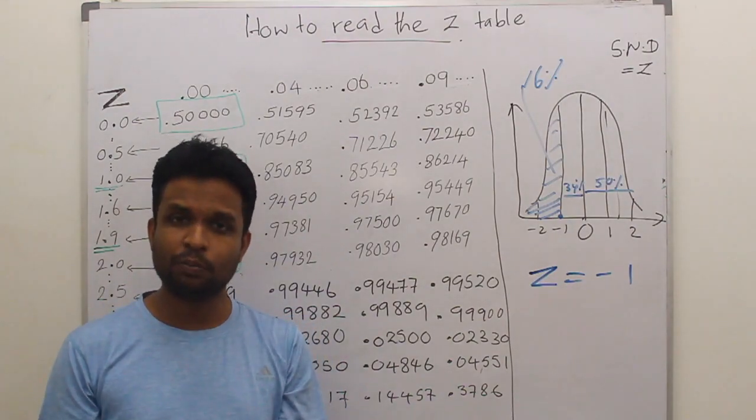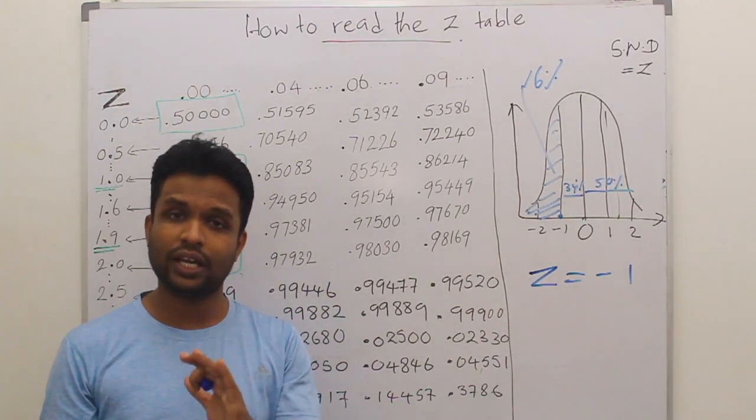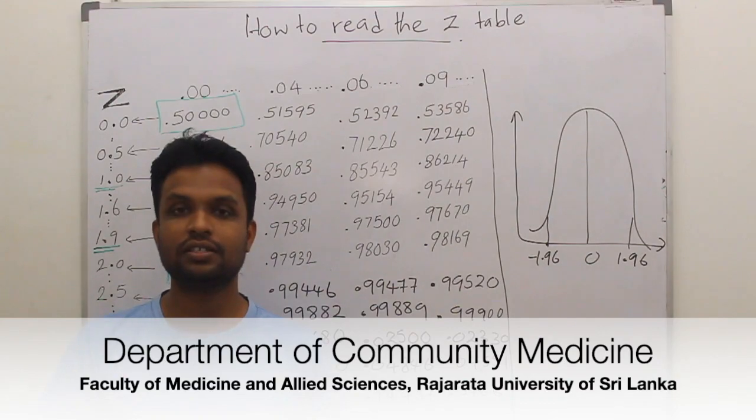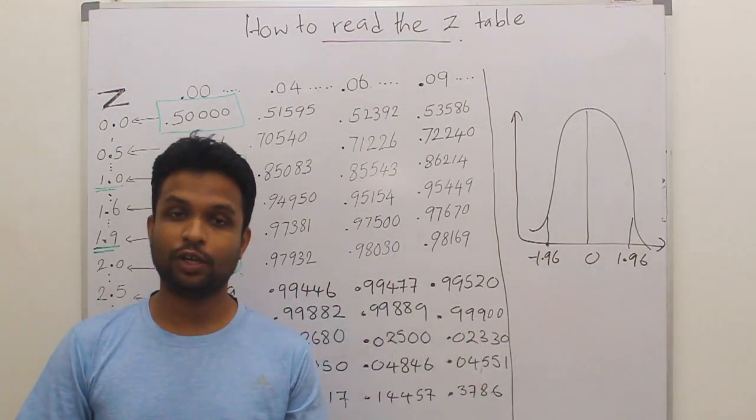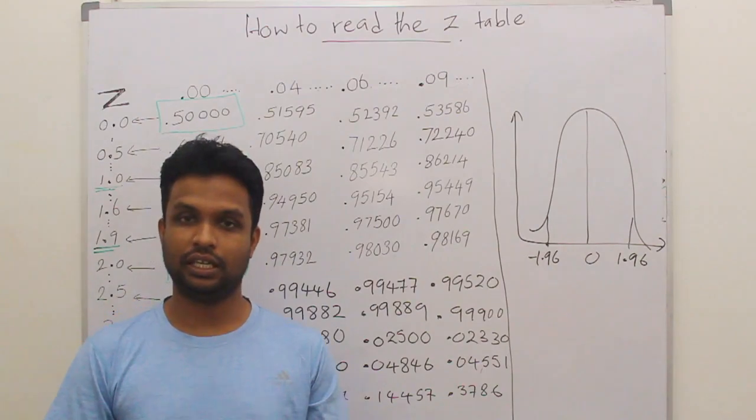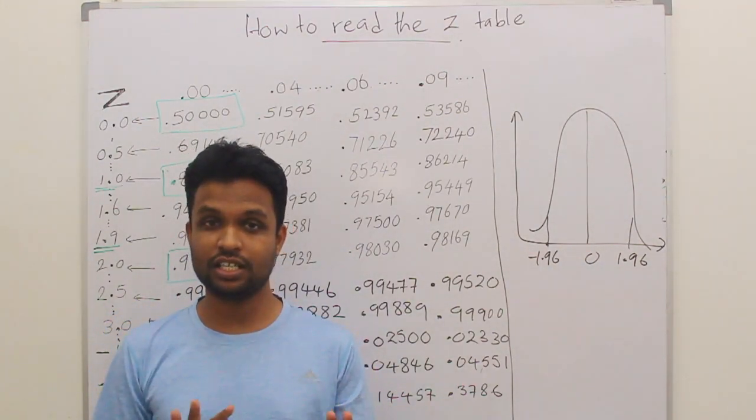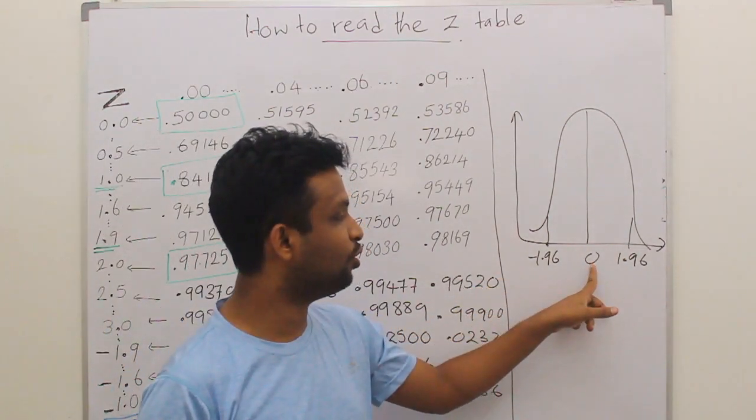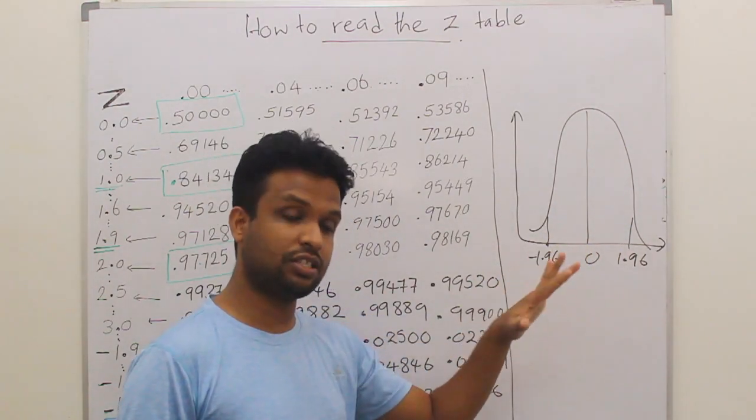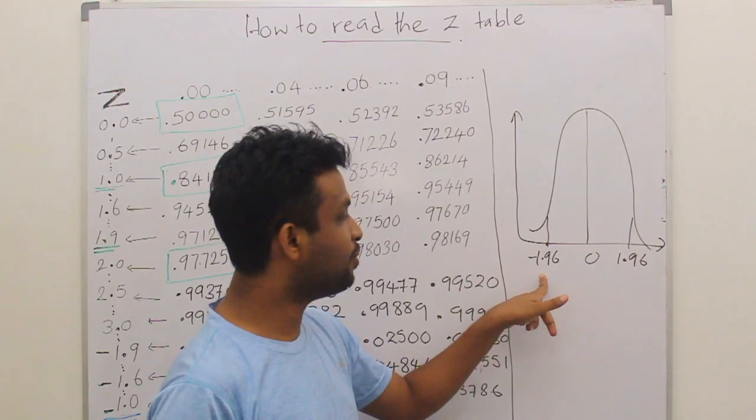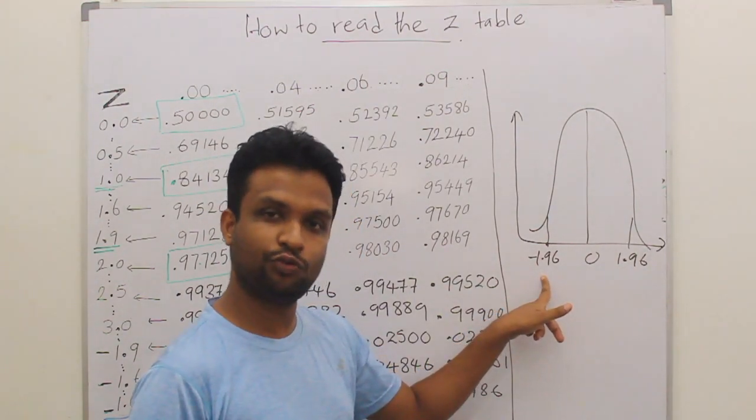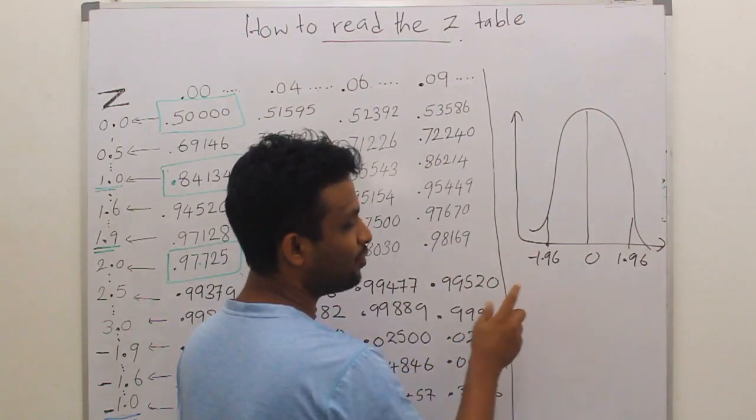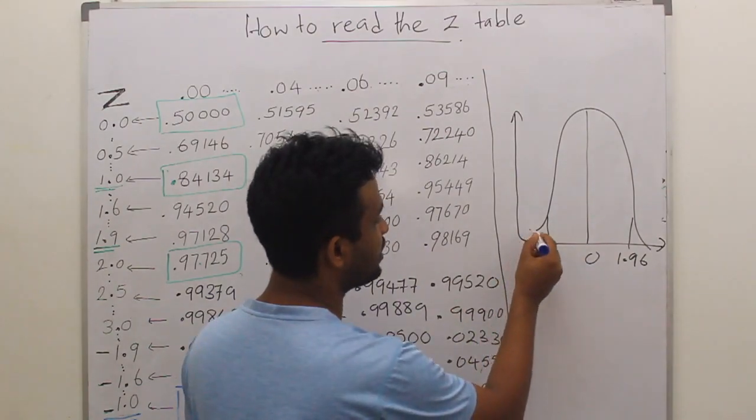I hope you are clear about how to read the Z table. Now we will consider a critical one. We know in statistics we are interested in 95%. What is 95%? 95% is the range of mean plus or minus 1.96 standard deviations. So I have drawn it here. We have mean 0 in standard normal distribution or Z distribution, plus 1.96 and minus 1.96.